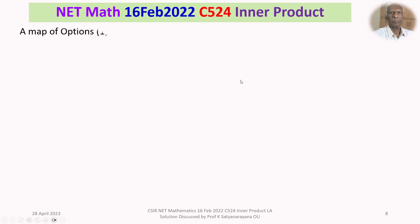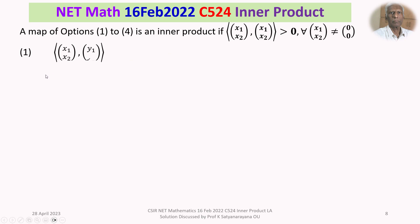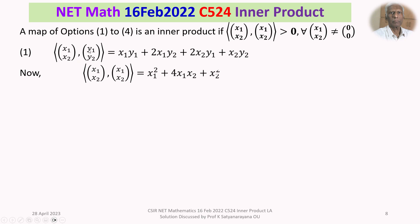Now we check option 1. The bracket (x1, x2) comma (y1, y2) is x1·y1 plus 2·x1·y2 plus 2·x2·y1 plus x2·y2. Substituting y1 = x1 and y2 = x2, we get bracket(x1, x2) with itself equals x1² plus 4·x1·x2 plus x2². This is a real quadratic form, which we write as X transpose AX, where X is the column vector (x1, x2) and A is the 2 by 2 real symmetric matrix [1, 2; 2, 1].